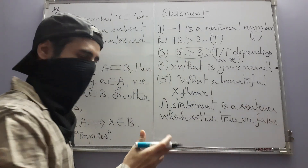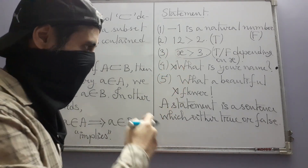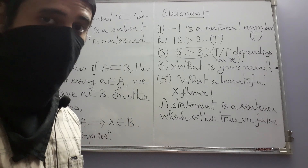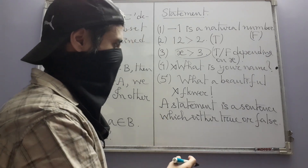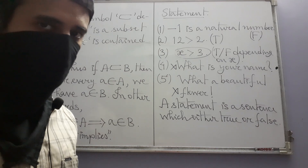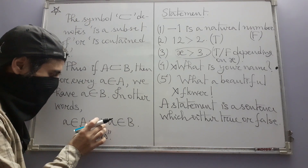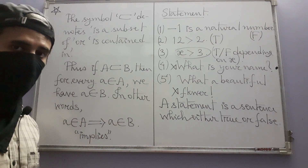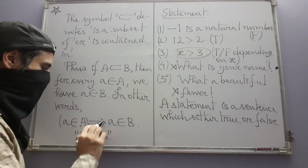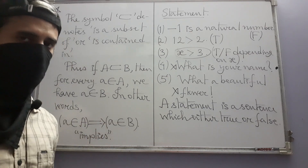A statement is a sentence which is either true or false — and of course not both. If the sentence has a variable, then for each fixed value of that variable, the resulting sentence should be either true or false. Such sentences are called statements. Now, 'implies' is a connective — it links two statements, one on each side of the symbol.